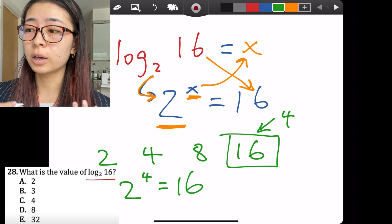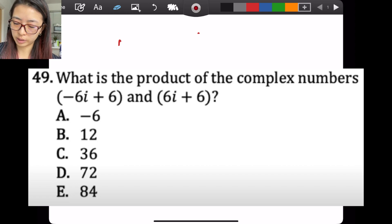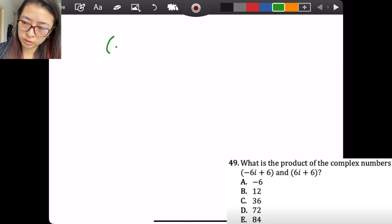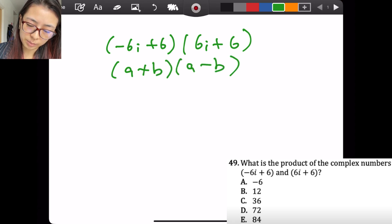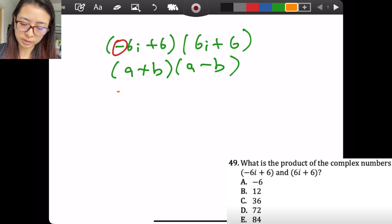Okay, what is the product of the complex numbers, quantity negative 6i plus 6, and quantity 6i plus 6? This YouTuber's solution is to FOIL it out, which is fine, but again we want to use the faster, smarter solution since we're under that time crunch on the ACT. We want to build a math sense, and here the math sense is that these two items we're multiplying together look familiar to a plus b times a minus b, because the only difference is this minus sign right here. A plus b times a minus b is very convenient because that simply equals a squared minus b squared.